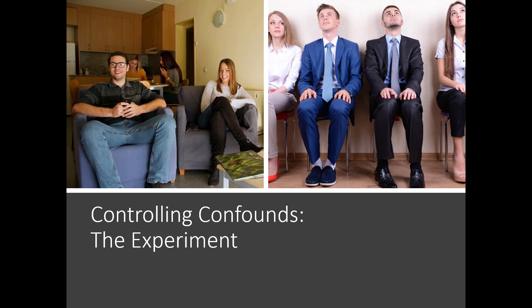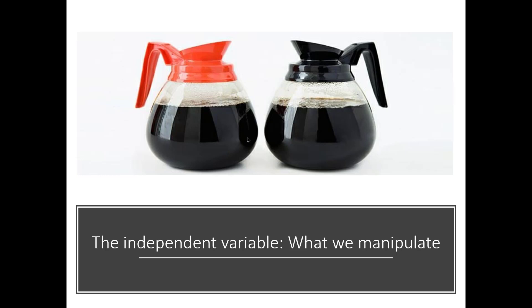The variable that we manipulate — the variable we are allowing to change between our groups to determine what effect it has — is called the independent variable. It's what we manipulate. For example, if you're a coffee connoisseur you might notice the orange top on the decaf pot. These two coffees are essentially identical in appearance and taste, but the content of caffeine can be very different. We are manipulating the amount of caffeine in the coffee — it is the independent variable.